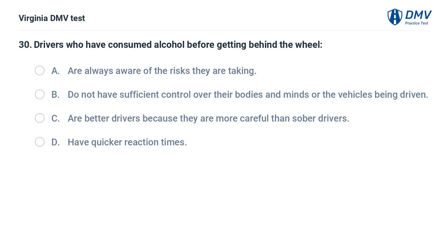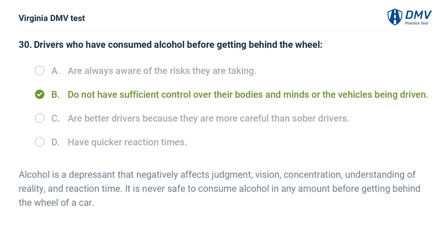Drivers who have consumed alcohol before getting behind the wheel: A. Are always aware of the risks they are taking, B. Do not have sufficient control over their bodies and minds or the vehicles being driven, C. Are better drivers because they are more careful than sober drivers, D. Have quicker reaction times. The correct answer is B. Alcohol is a depressant that negatively affects judgment, vision, concentration, understanding of reality, and reaction time. It is never safe to consume alcohol in any amount before getting behind the wheel of a car.